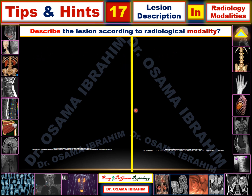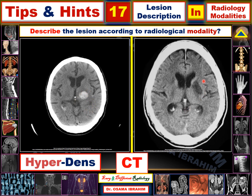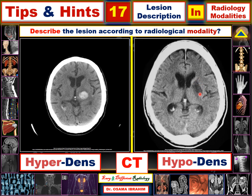The first five slides include images from different imaging modalities. The question is: describe the lesion according to the radiological modality. Here we have a CT brain without contrast with two lesions. Since CT depends on density, these lesions can be described as hyperdense — which is the proper radiological term.